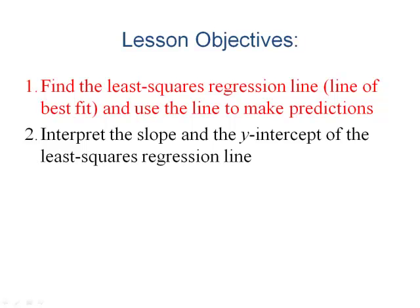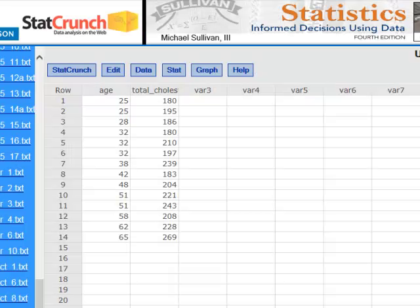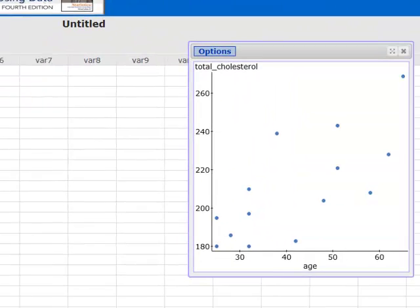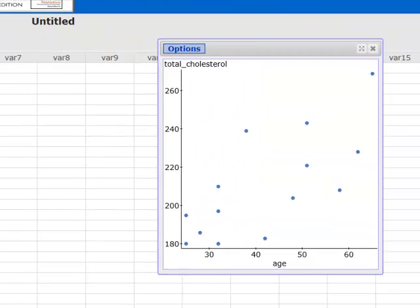Welcome back. In this video we're going to see how to get our software to give us the least squares regression line, and then we'll use the line to make predictions. Recall our age-cholesterol data. We've said that it appears there's a linear relationship between total cholesterol and age. As age increases, total cholesterol tends to increase at a roughly constant rate.